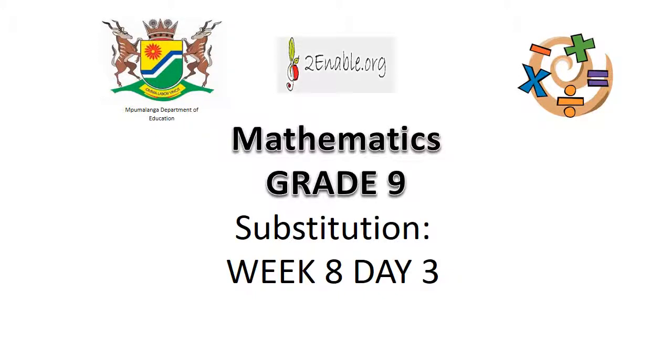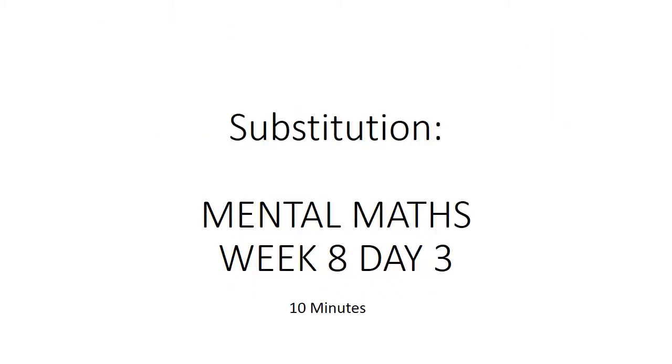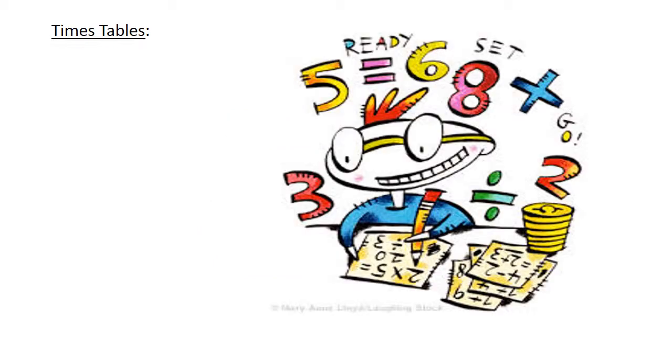Substitution. Mental math. Times tables. 9 times 7 equals 63. 8 times 7 equals 56.